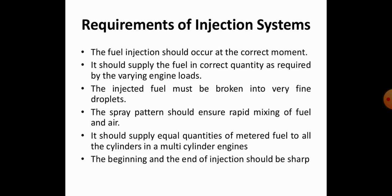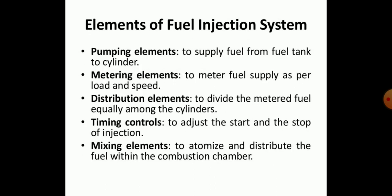The start and end points of injection must be sharp and precise. The elements of the fuel injection system include the pumping elements, whose main function is to spray the fuel into the combustion chamber as required and to supply fuel from the fuel tank to the cylinder. The metering elements measure and meter the fuel supply as per the load and speed required. The distribution elements divide the metered fuel equally among the cylinders. The timing control elements adjust and start or stop the injection as required. The mixing element atomizes and distributes the fuel within the combustion chamber.